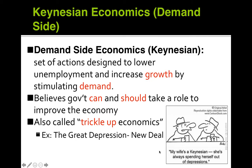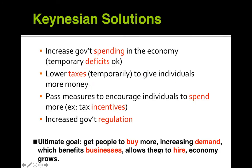Keynesian solutions include increased government spending, with temporary deficits considered acceptable. This lowers taxes temporarily to give individuals more money, passes measures to encourage spending through tax incentives, and increases government regulation. The ultimate goal is to get people to buy more, increase demand, which benefits business, allows them to hire, and the economy grows.